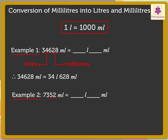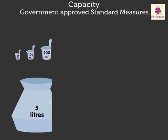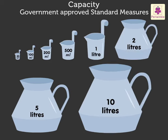Now let us convert 7,352 milliliters to liters and milliliters. Here, the first three digits from the right — that is, 352 — show the milliliters, and the digit 7 shows the liters. Therefore, 7,352 milliliters is equal to 7 liters 352 milliliters.